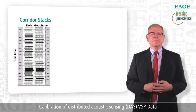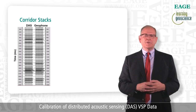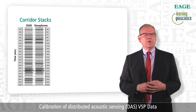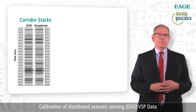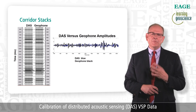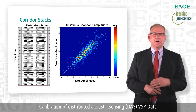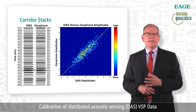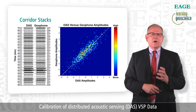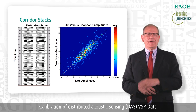Now let's look at one of the conventional VSP products, the corridor stack. The left set of traces is the corridor stack derived from the zero-offset DAS VSP data, and the right column shows the corresponding corridor stack from the geophone data. As you can see, we have an excellent agreement between them. On the right plot, we now overplot the geophone data in black on top of the DAS data in blue, and we see very good similarity. To further analyze this comparison, we've cross-plotted the normalized amplitudes from the DAS data on the horizontal axis with the geophone data on the vertical axis. The colors indicate the number of hits or folds in each cell. The dark blue indicates no hits, and the dark red indicates a maximum number of hits. I've plotted a 45-degree line which represents a perfect match, and we can see that the DAS and geophone amplitudes match very well.